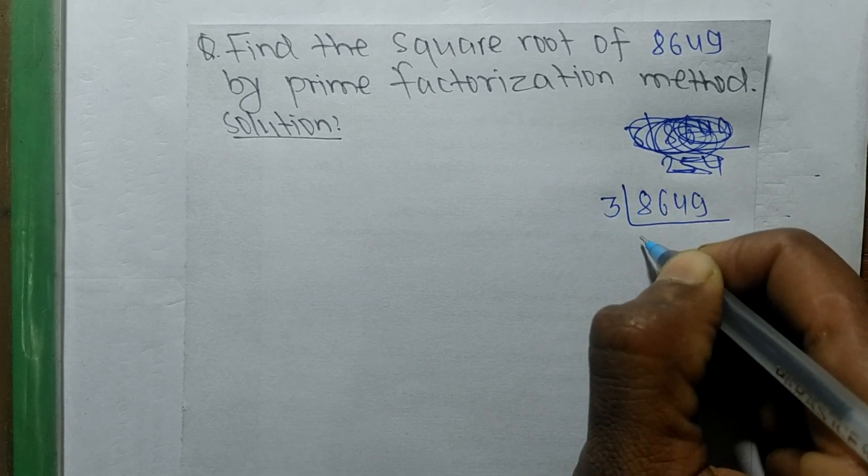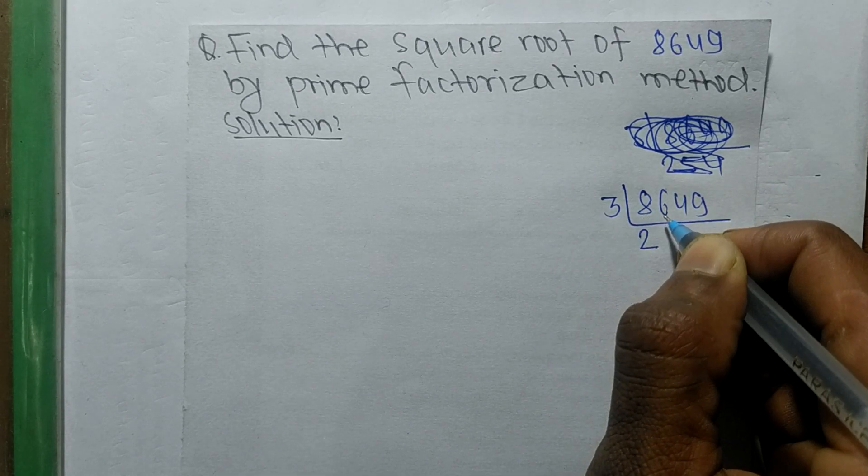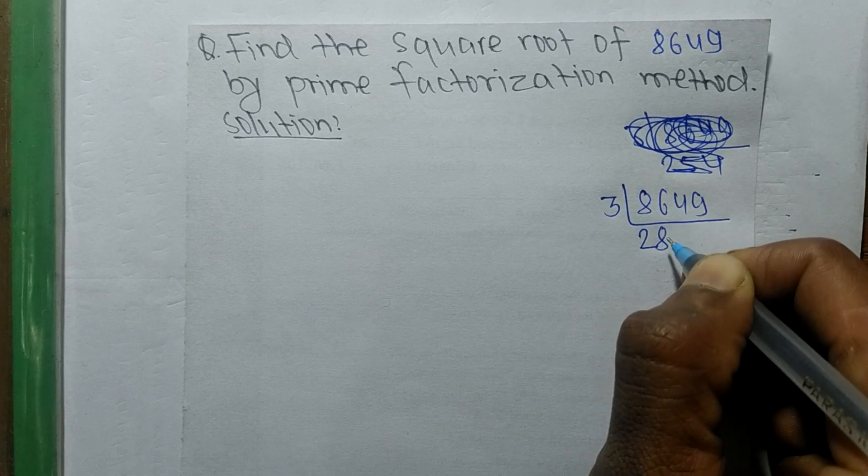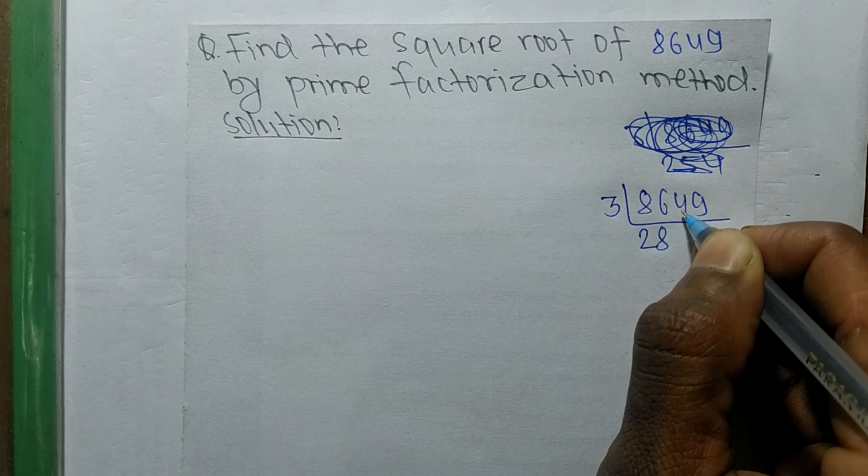So it is divisible by 3. So 3 times 2 means 6. 26, 3 times 8 means 24.